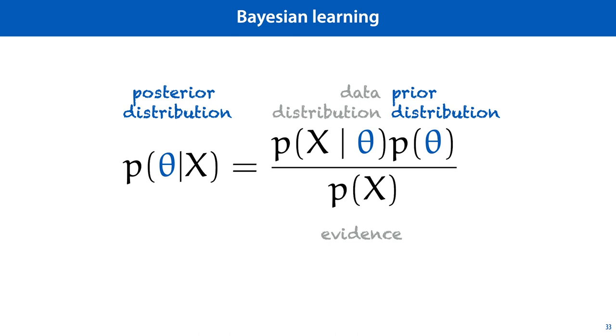For more complicated models, it's usually impossible to work out the posterior analytically, and we have to make do with a function that approximates it, or with a number of individual samples from the posterior.